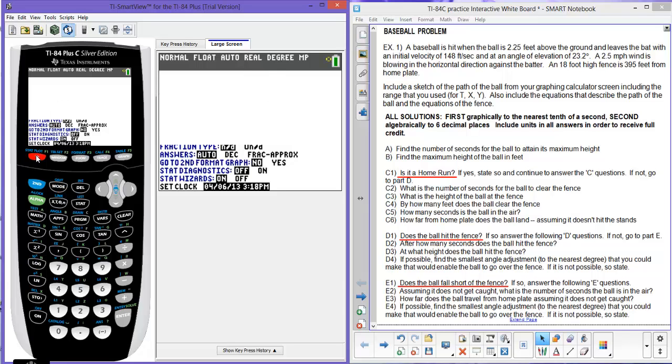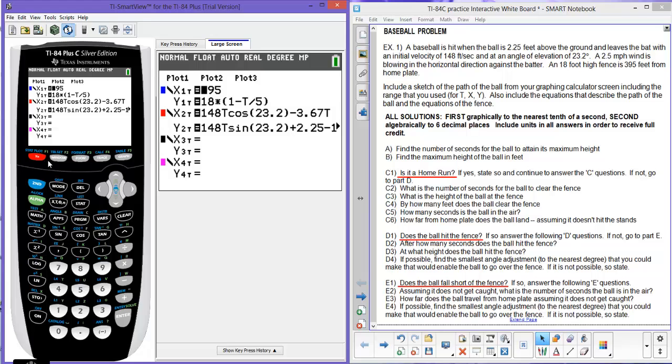Let's go to y equals, and since I'm in parametric mode, I have x1t and y1t. The first one in blue is the equation of the fence. The fence is 395 feet away, and the 18 foot high fence is there, and I'm going to clock this for five seconds. So that's where x1t and y1t came from.